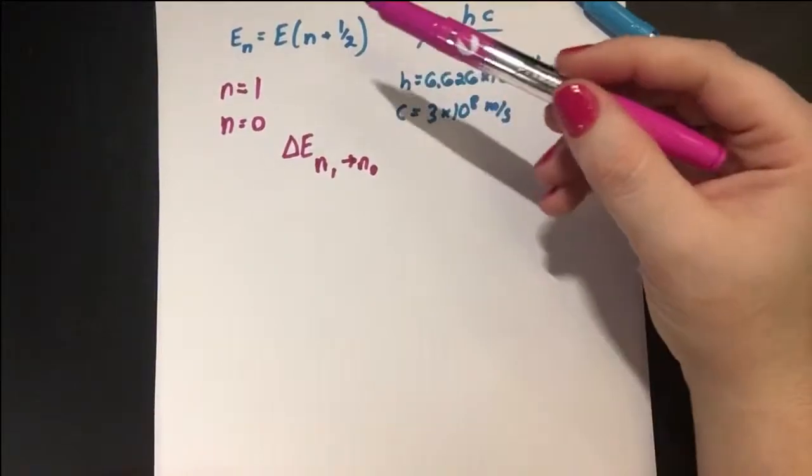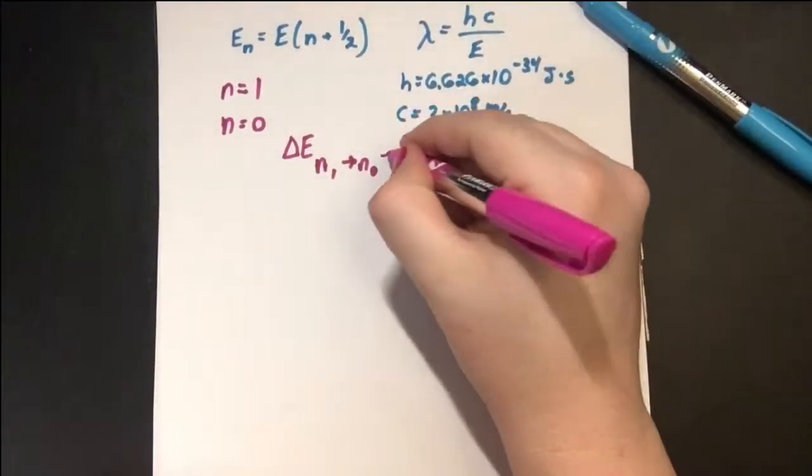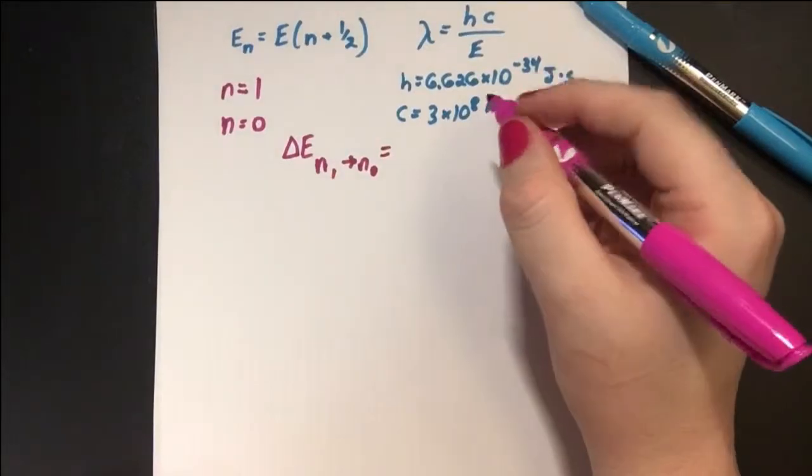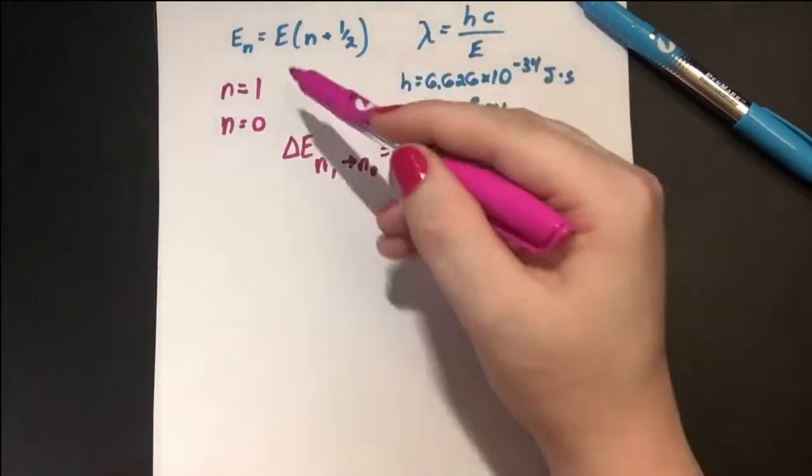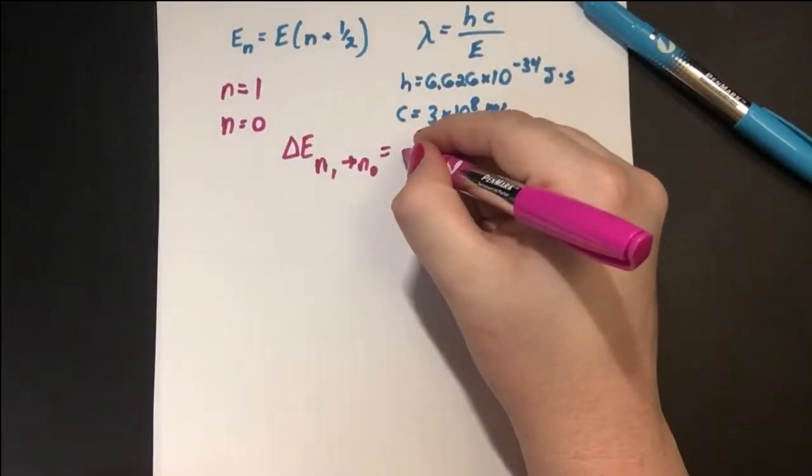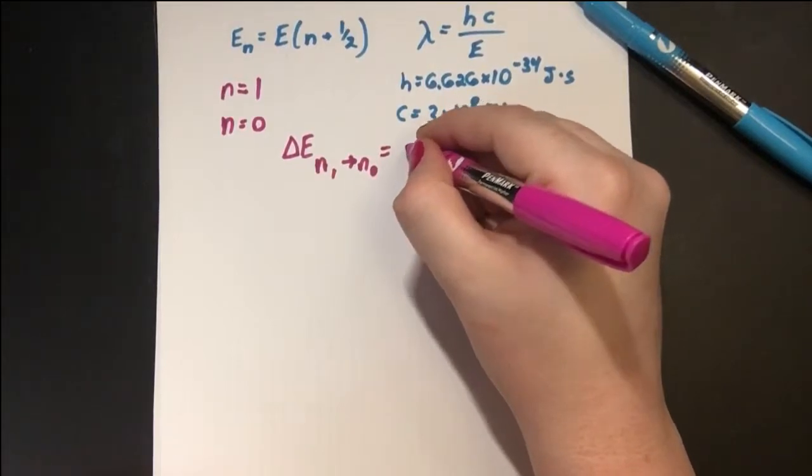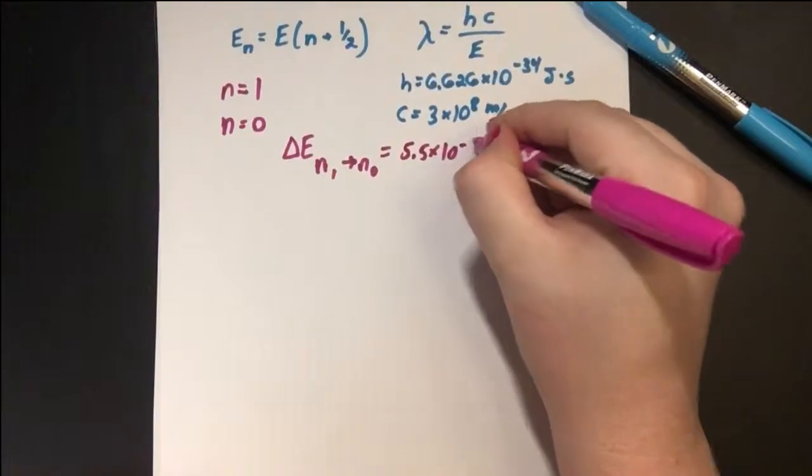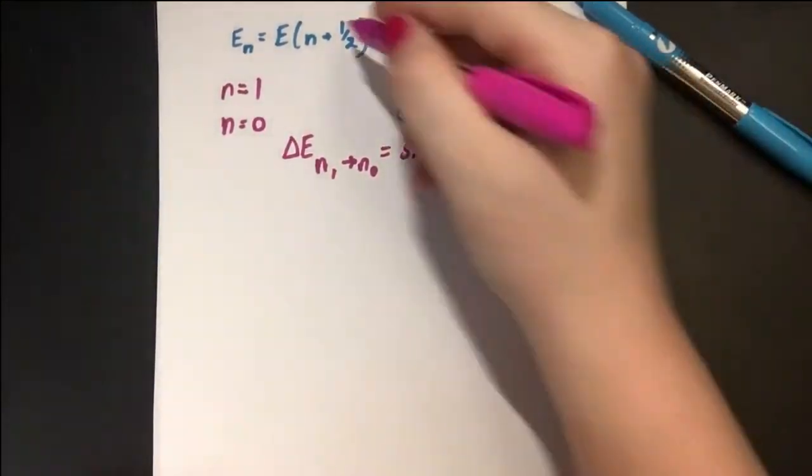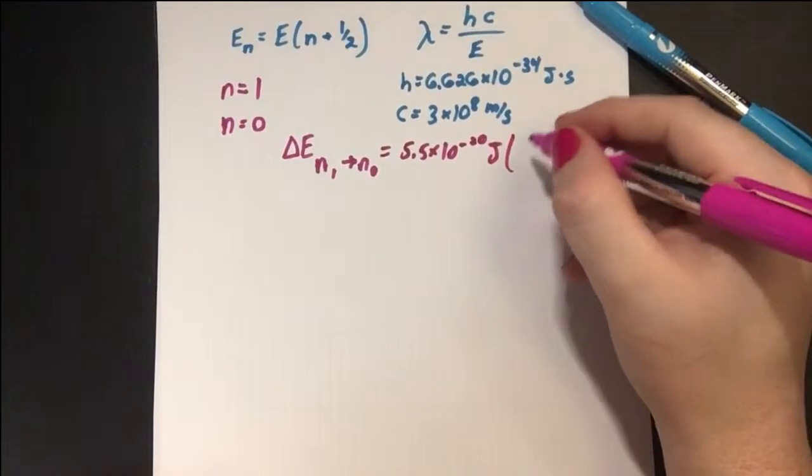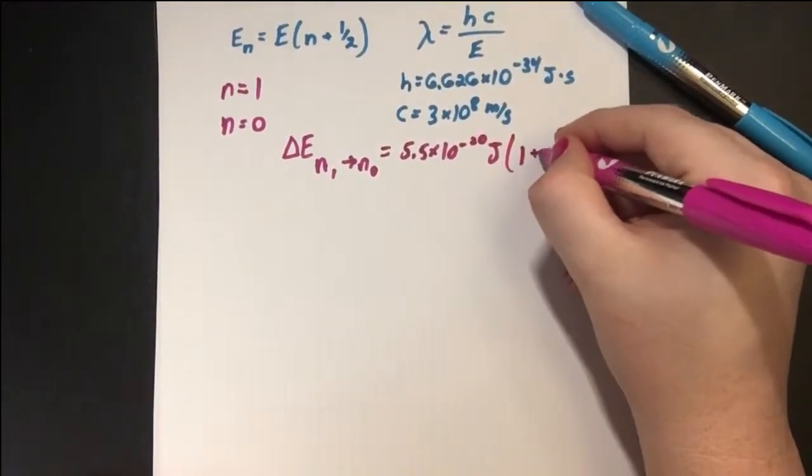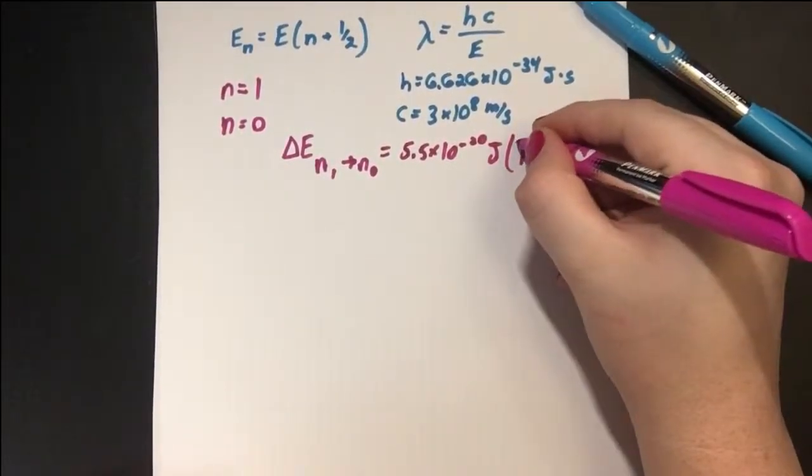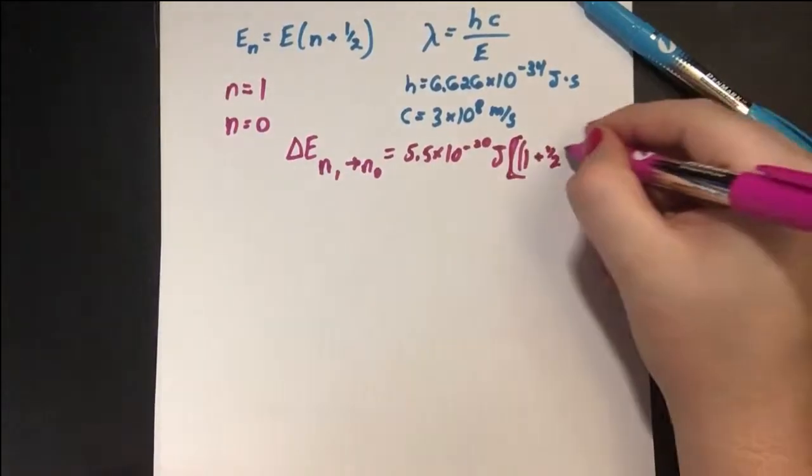So we want to see the change in energy. This is just saying, all right, we're given that E, the energy of a vibrating molecule, is 5.5 × 10⁻²⁰ joules. Now we just plug in our values. So we have n = 1 plus 1/2, put that in brackets.